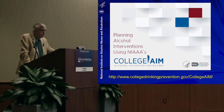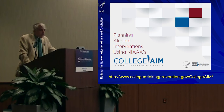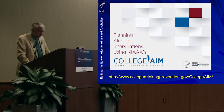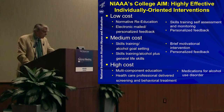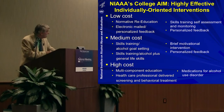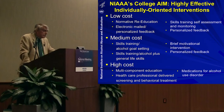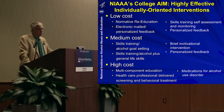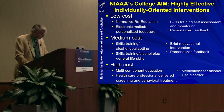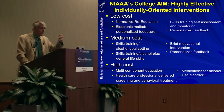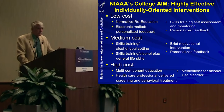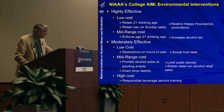Last year NIAAA released what we call College AIM. Our best researchers reviewed literature on individually-oriented and environmental policy interventions targeting college students. At the individual level, highly effective interventions at low, medium, and high cost are listed. After reviewing over 60 different interventions and over 200 research articles at the individual level, they assessed how many studies were done, the quality of those studies, strength of findings, costs, barriers, and ways to overcome those barriers.